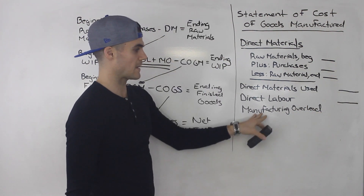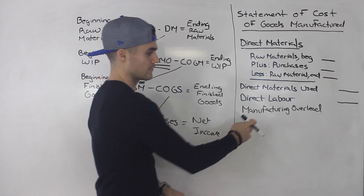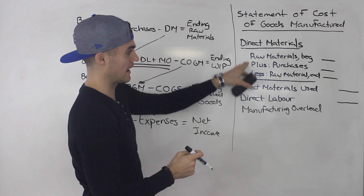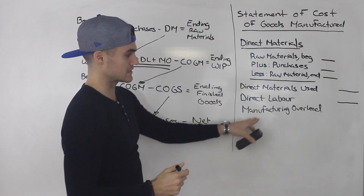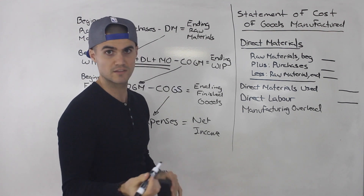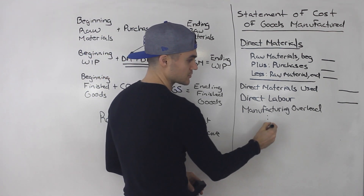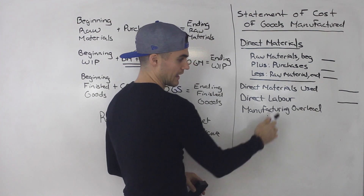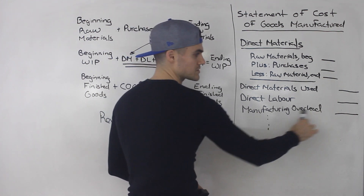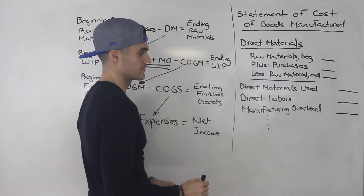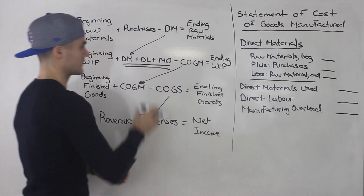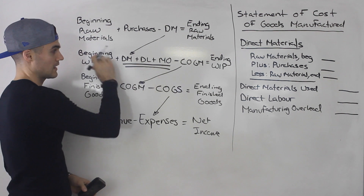Lots of times this manufacturing overhead is actually going to have multiple components to it, similar to how direct materials had its own section. You're going to have items like indirect labor, maybe the utilities on the factory, et cetera. So a lot of times you'll have a list that sums up to a certain number. But for now, I'm just going to put that number as is. Notice that all three of these things added up correspond to these three items in the formula.